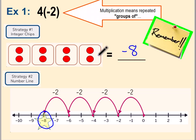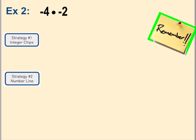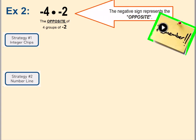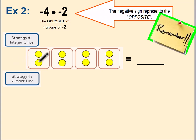Example two: negative four times negative two. You may see the dot used to represent multiplication instead of an x — same thing. Remember that the negative sign means the opposite of. So this is really saying the opposite of four groups of negative two. Groups cannot be negative, so we still want four groups, but we take the opposite of negative two, which is positive two. So each group has two positives. Count them up: two, four, six, eight — your answer is positive eight.